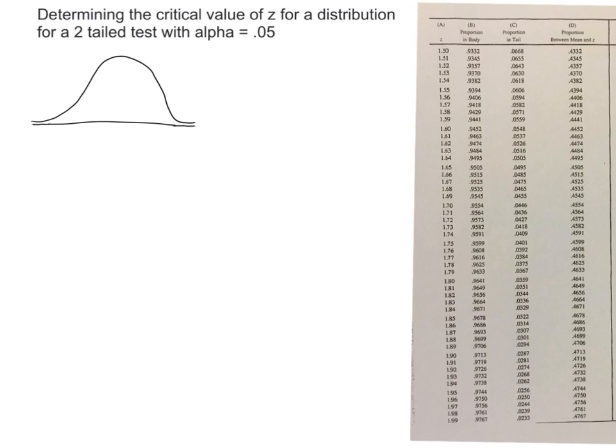Determining the critical value of Z for a distribution for a two-tailed test with alpha being set at 0.05. So you're going to need your unit normal table, or your Z table if you want to call it that. That's what I kind of referred to it as, but the technical term is unit normal table.